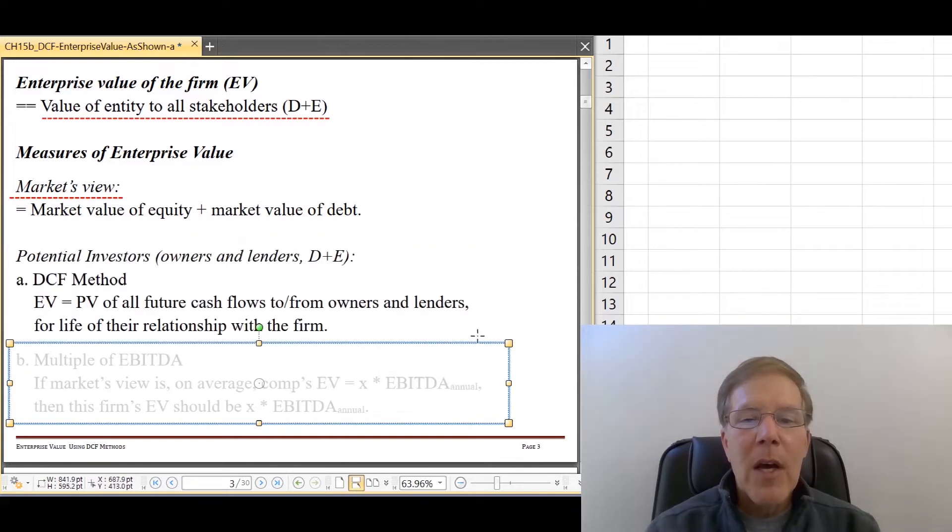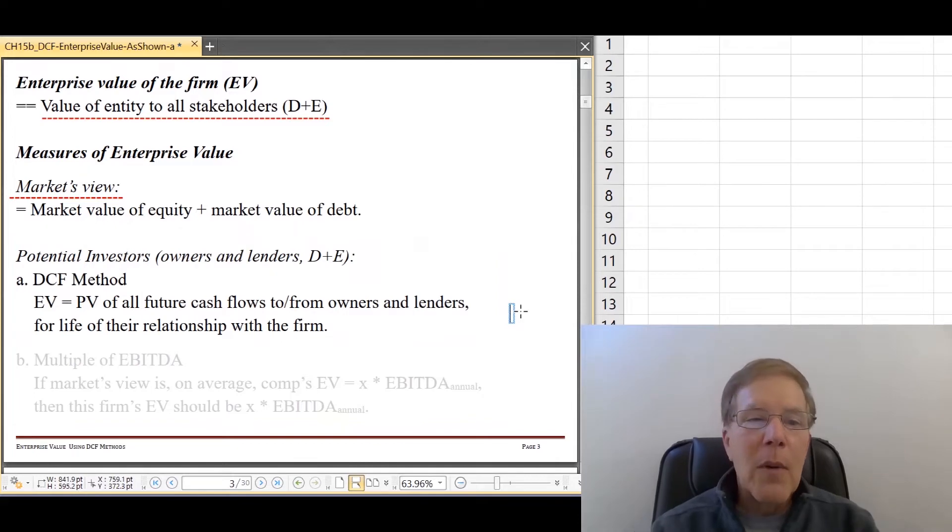And next, we want to think about potential investors and what enterprise value means to them. So there are a couple ways for potential investors to suss this out. The first and the one that we're going to be most focused on is the DCF method. And in this case, the enterprise value is the present value of every stinking cash flow that lenders and also shareholders believe will be coming from the company available for those two groups to split up in whatever way they've decided to split up. So that's what we're going to be focused on. And this is going to be what we're going to use for our best estimate of the intrinsic value or the true value of the enterprise value of the firm. And then as usual, we compare that to Mr. Market. And if our value is, if our estimate is much higher than Mr. Market's, et cetera, et cetera, we go from there.